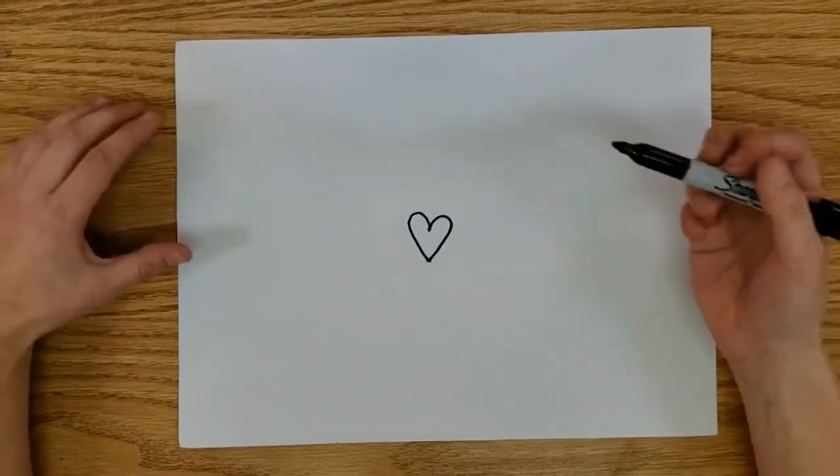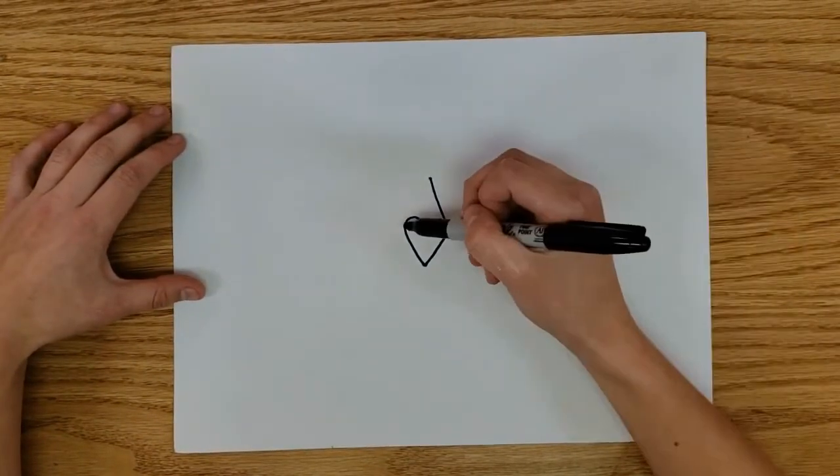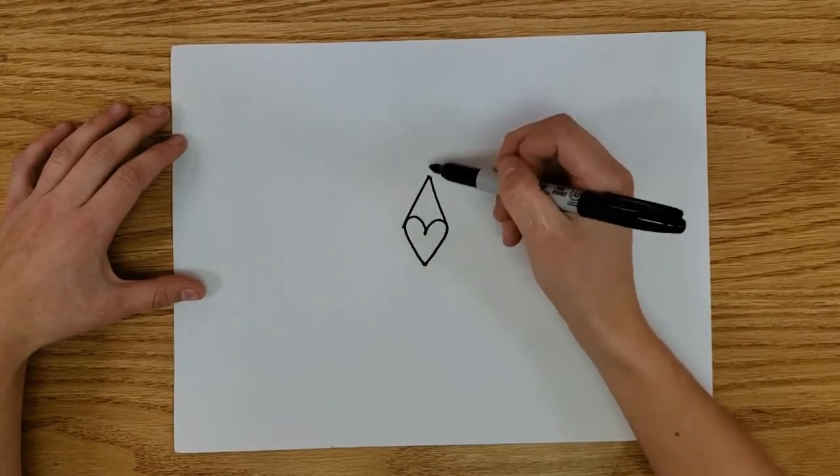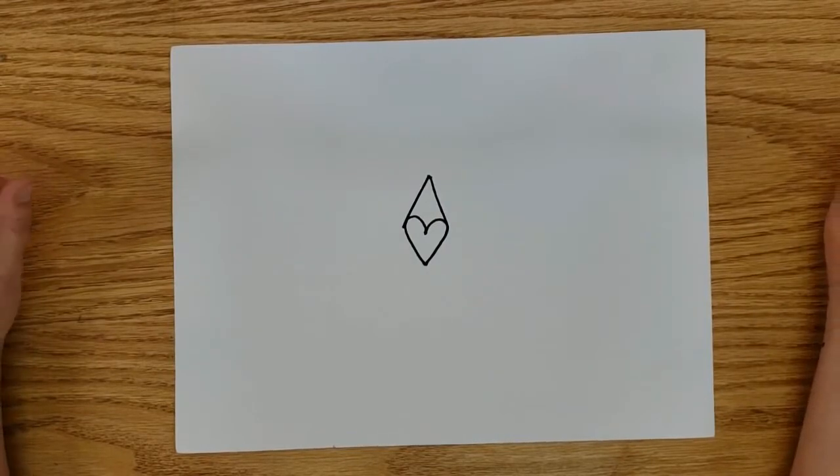Let's continue on. From the outside points of our heart, we are going to be making a little mountain. It goes like this: outside point up, outside point up, so it's in the shape of a mountain or kind of like a triangle.